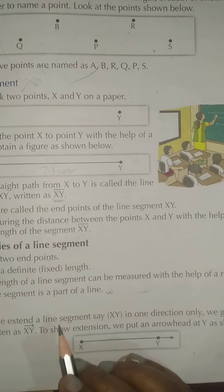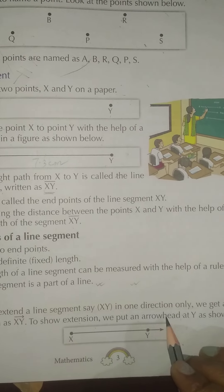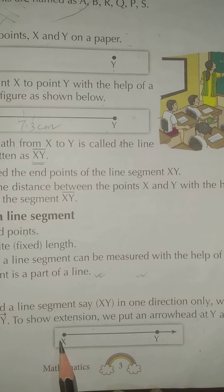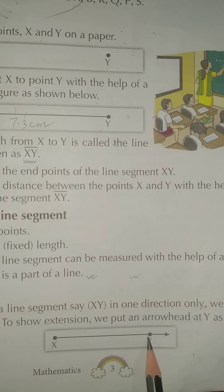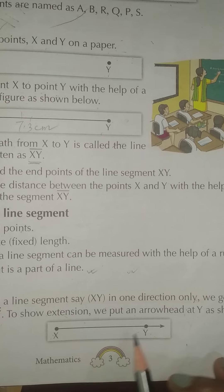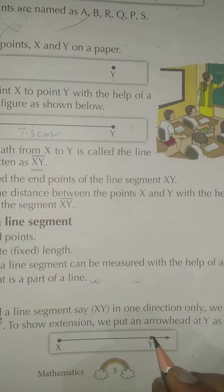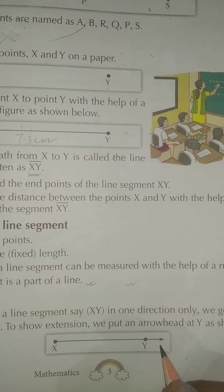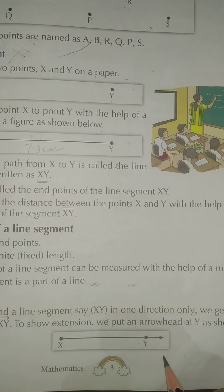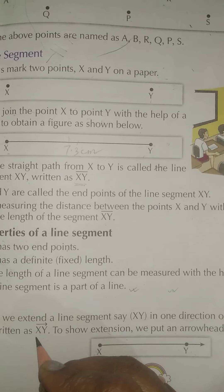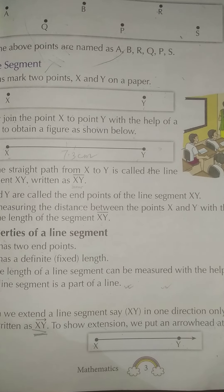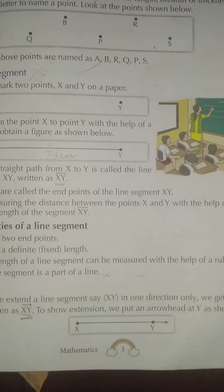You can see the arrow is drawn. To show extension, we put an arrowhead above Y as shown. At first two points are given — that is X and Y. The lines are joined, and it becomes a line segment. But the line is extended in one direction — that is the right-hand direction. So this extended line is called a Ray, and it is written in this form: XY with an arrow sign above.